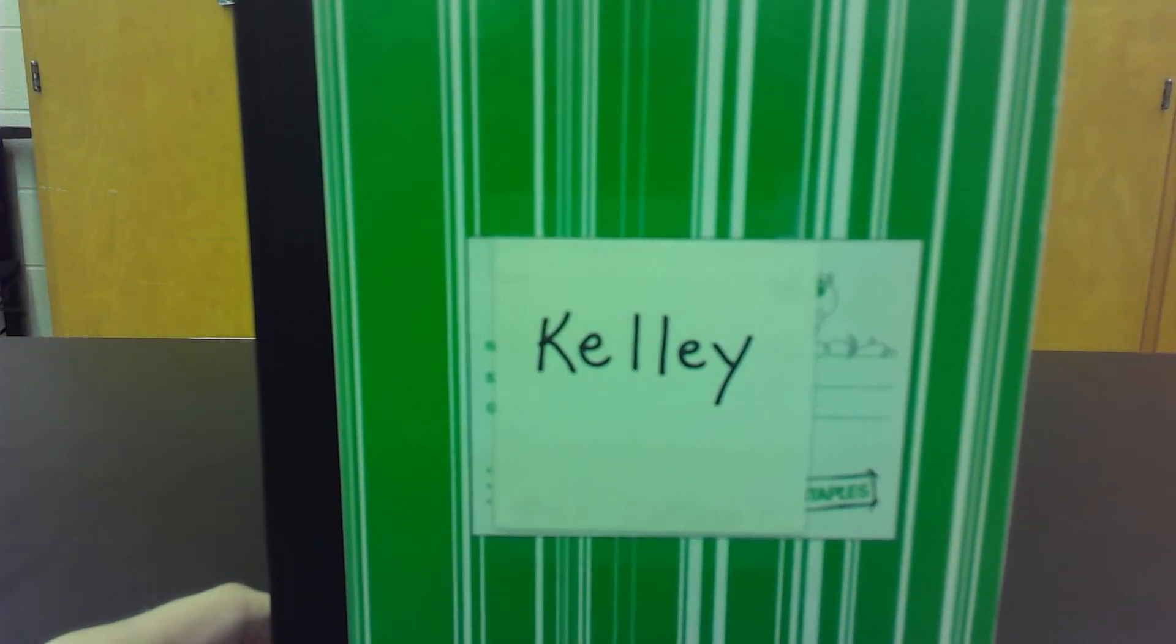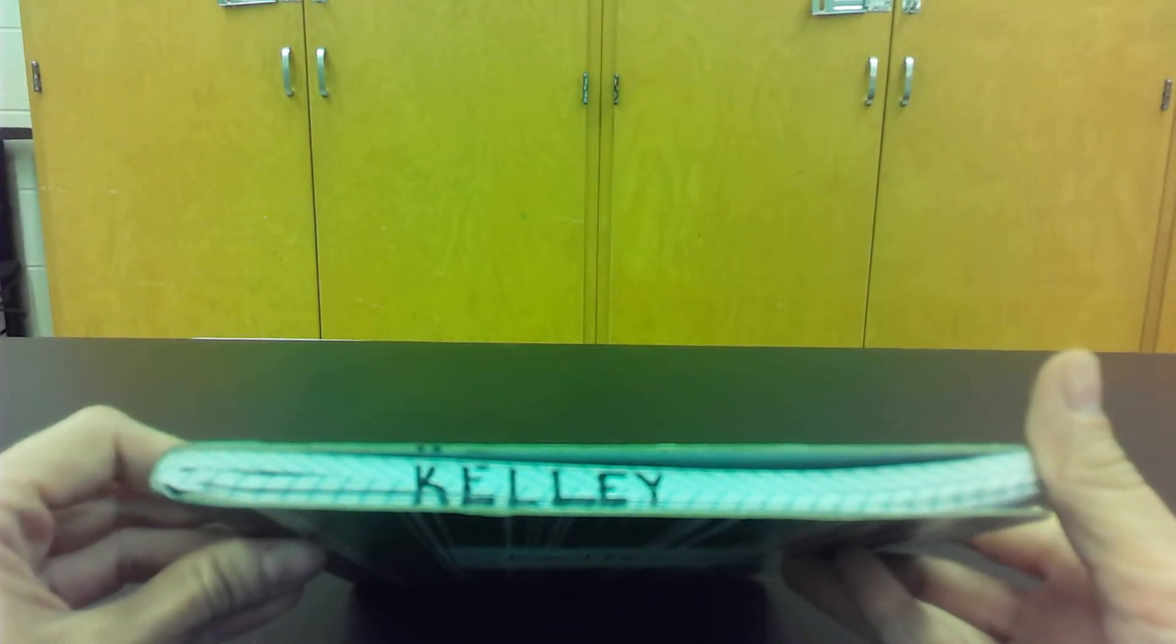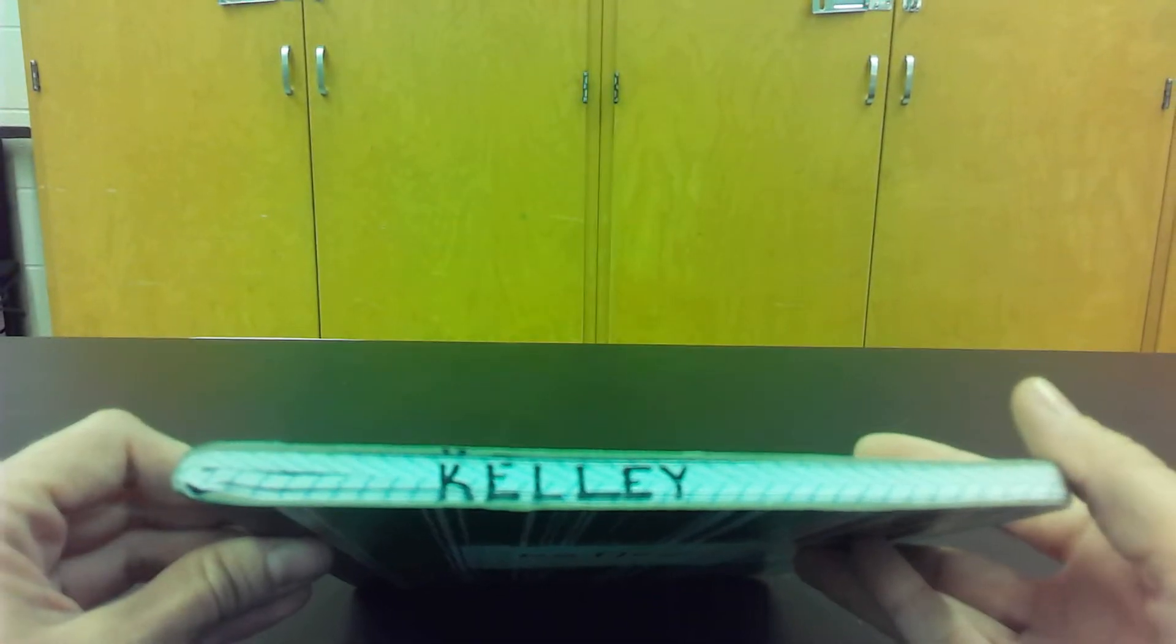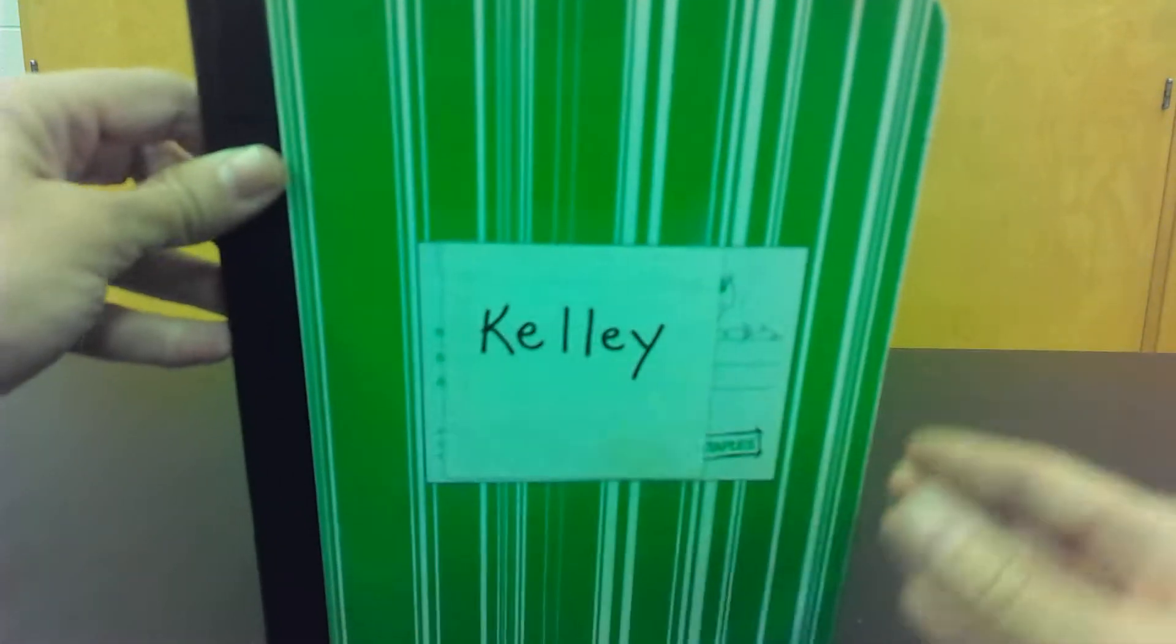All right, so on the front of your lab manual you need your last name, and then on the top binding you also need your last name. So your binding needs to be written with Sharpie—last name, last name.